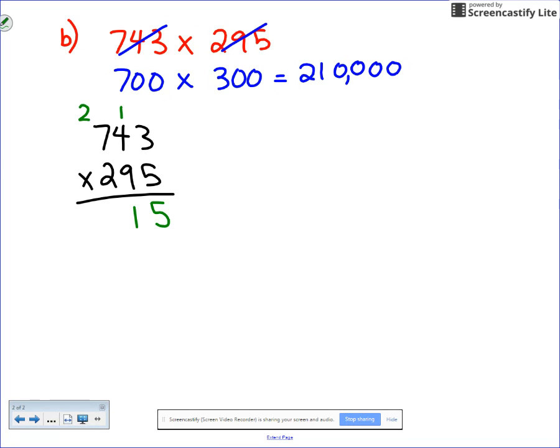I'm done with the ones place, I'm moving to the tens place which is where the nine is. Nine times three is 27, carry the two. Nine times four is 36 plus two is 38. Nine times seven is 63 plus three is 66.